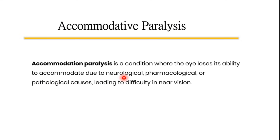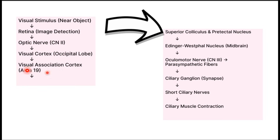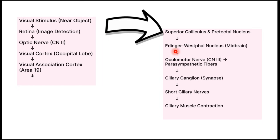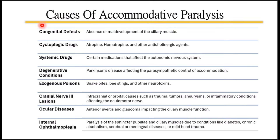Accommodative paralysis is a condition where the eye loses its ability totally to accommodate due to neurological, pharmacological, or pathological causes, leading to difficulty in near vision. The accommodative pathway runs from the retina through the optic nerve, optic chiasm, optic tract, lateral geniculate body, to the visual cortex and visual association area, then to the superior colliculus and pretectal nucleus, the Edinger-Westphal nucleus, and via the third nerve parasympathetic fibers to the ciliary ganglion, with post-ganglionic fibers reaching the ciliary muscle through the short ciliary nerves. Damage anywhere along this pathway can cause paralysis of accommodation.